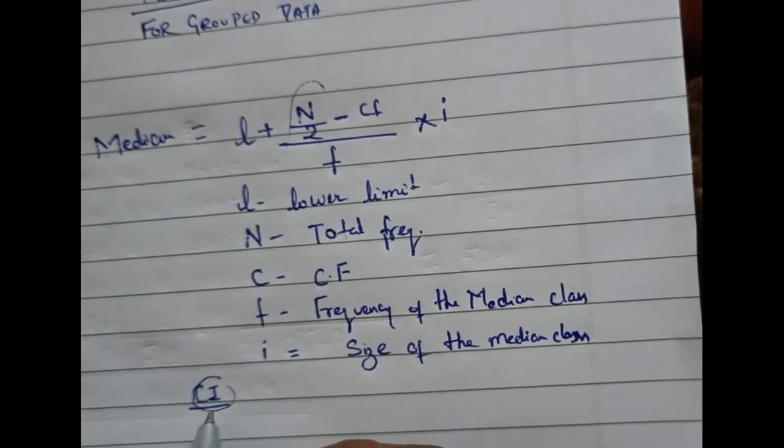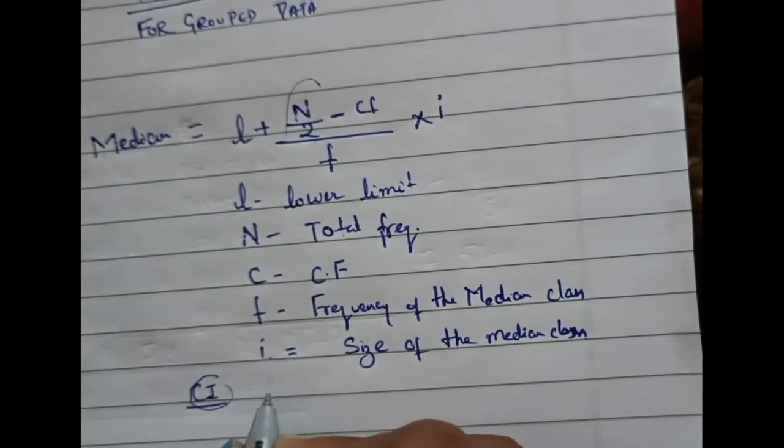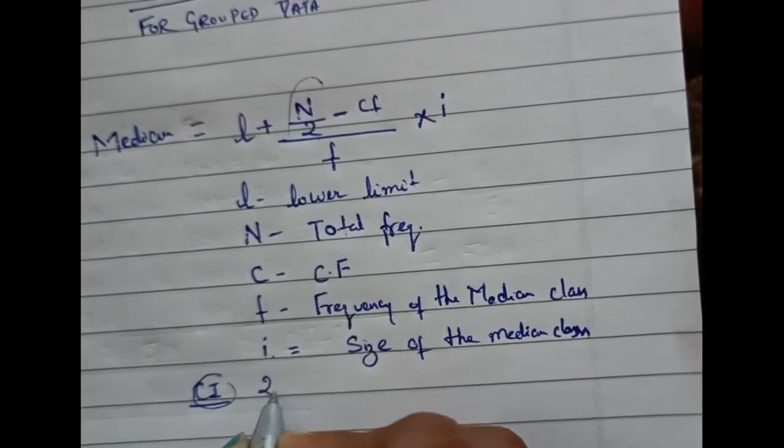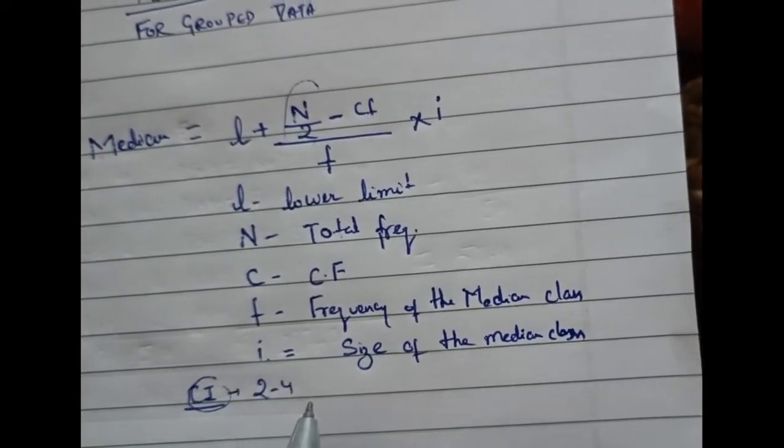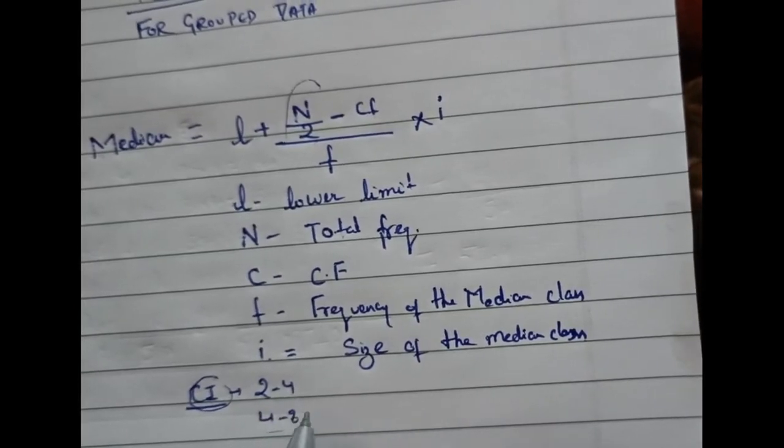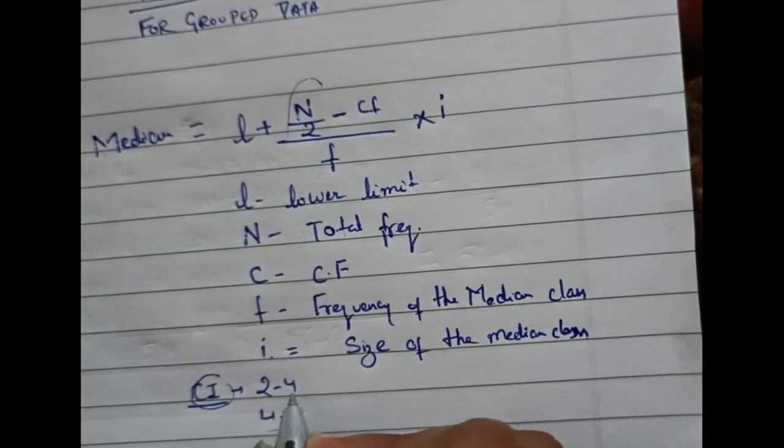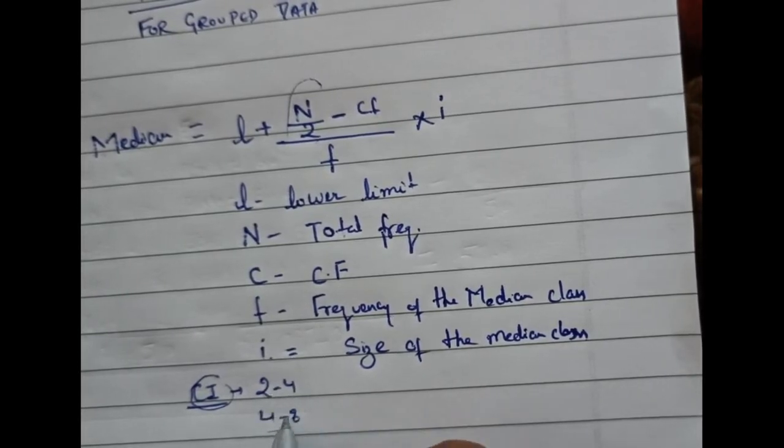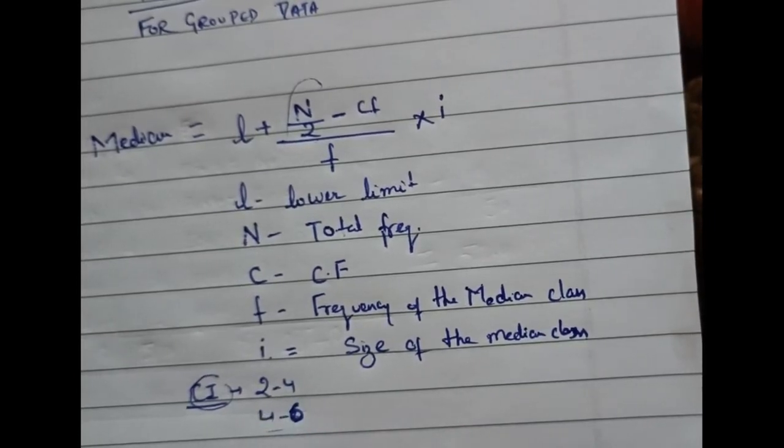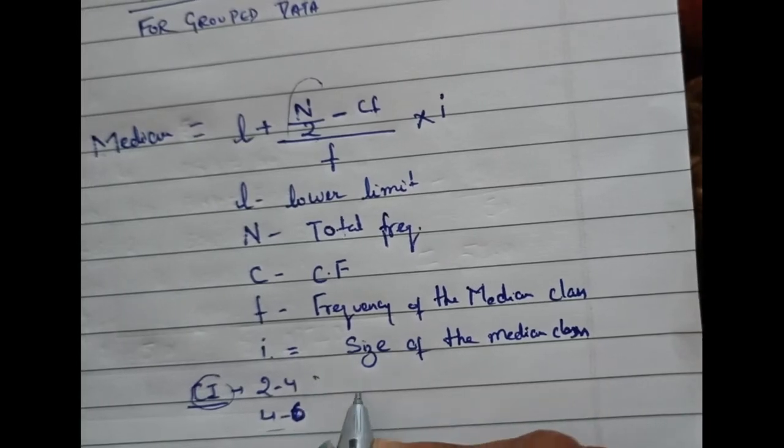Here in the median, what you'll do is find I. I is the difference between the lower and the higher limit. If the class interval is 2 to 4, 4 to 6, then you'll find 4 minus 2. When the question is given to you, the difference will be continuous, and that is how you'll be finding I.